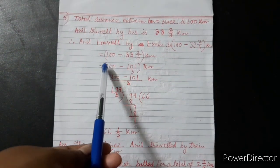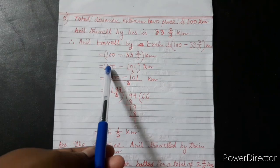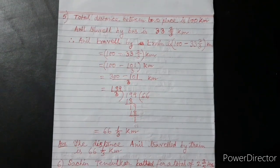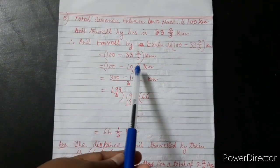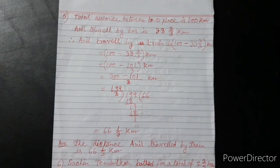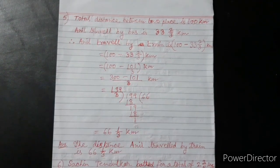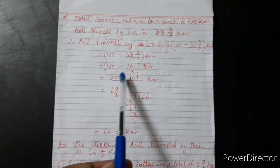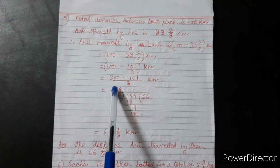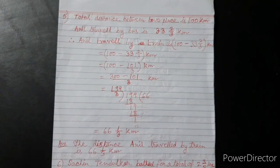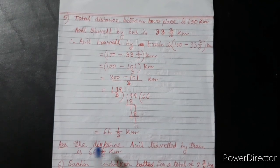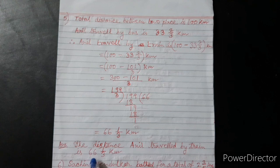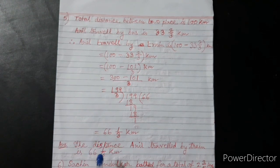So, 300 minus 101 means 199 by 3. Now, let us make a mixed fraction of this. It is 66 and 1/3 km. The distance Anil travelled by train is 66 and 1/3 km.